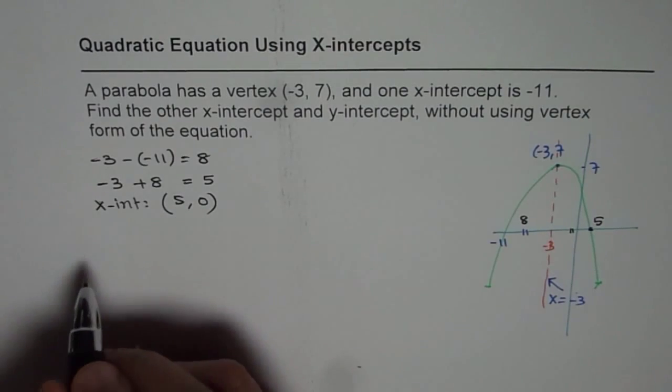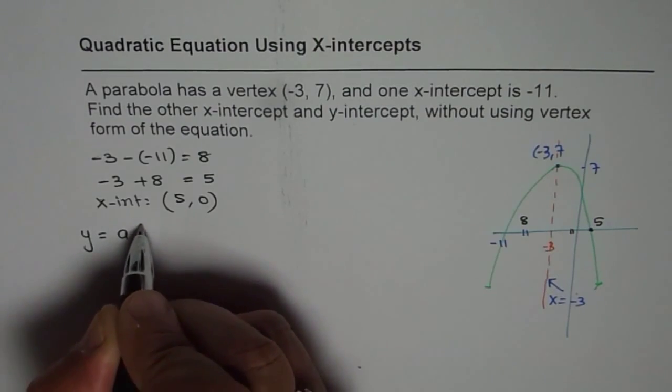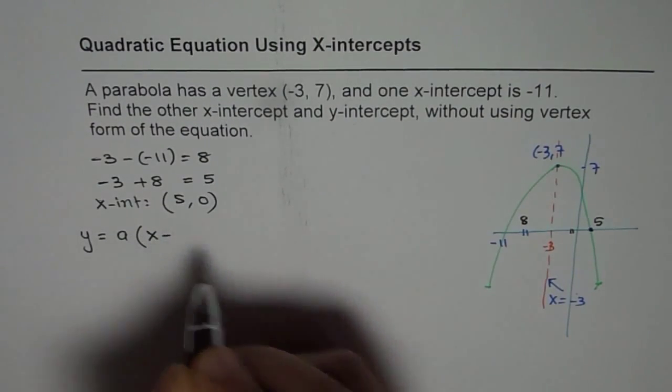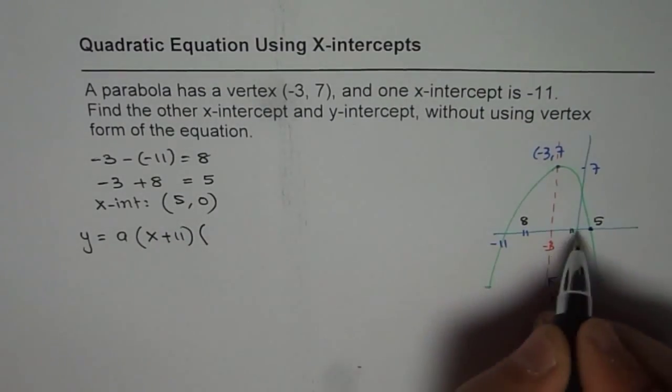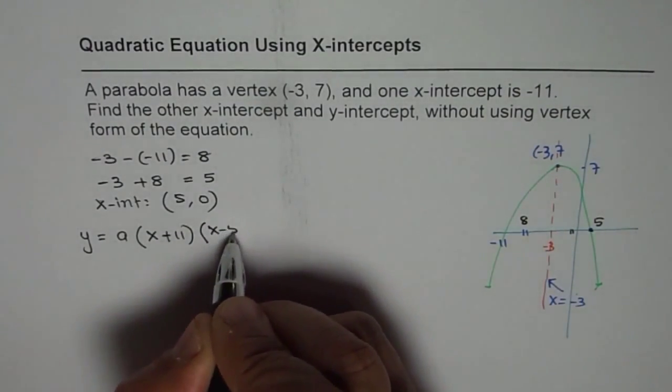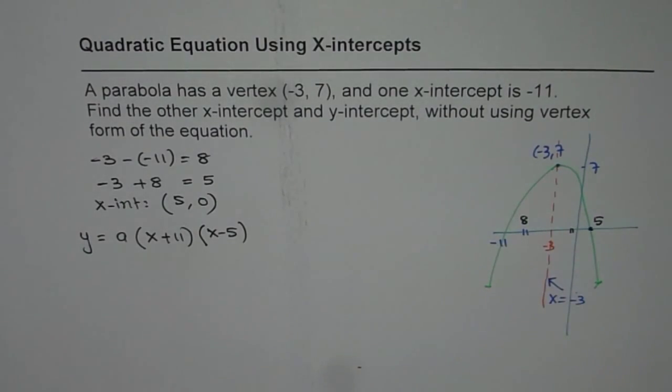So using these intercepts, we can find the equation. We can say y equals to a times (x minus -11), that gives me (x + 11), times (x - 5). Is that okay? So using these two intercepts, we can find the equation of the parabola.